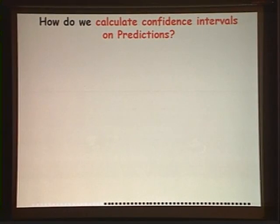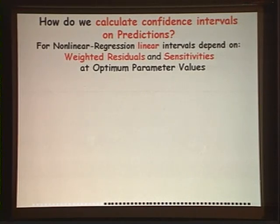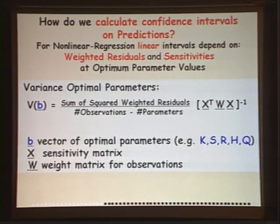Let's talk about how we calculate those red confidence intervals on the predictions. If we're using nonlinear regression like UCODE or PEST, the confidence intervals depend on the weighted residuals and the sensitivities at the optimum parameter values. First we calculate the uncertainty on the parameter values. V is the variance-covariance matrix on the parameters we've been estimating—B represents hydraulic conductivity, storage coefficient, recharge, heads, flow rates.